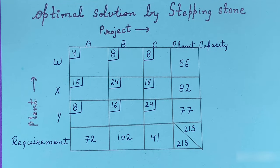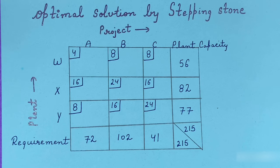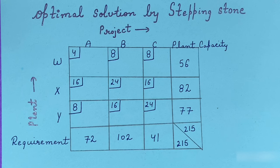In this video we will learn to find the optimal solution of a transportation problem by the stepping stone method. We had already learned the methods of finding the initial basic feasible solution in previous videos. We can find the initial basic feasible solution either by the northwest corner method, least cost entry method, or by Vogel's approximation method. Here we will use the northwest corner method.